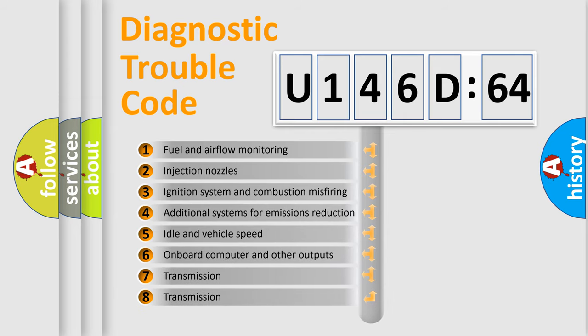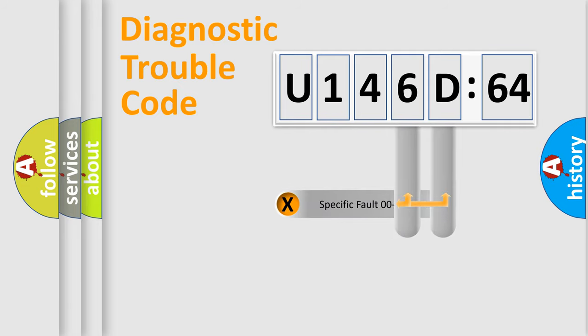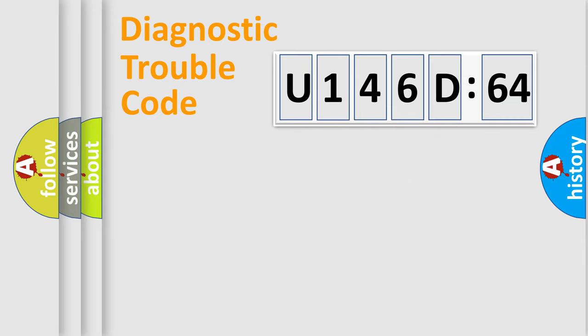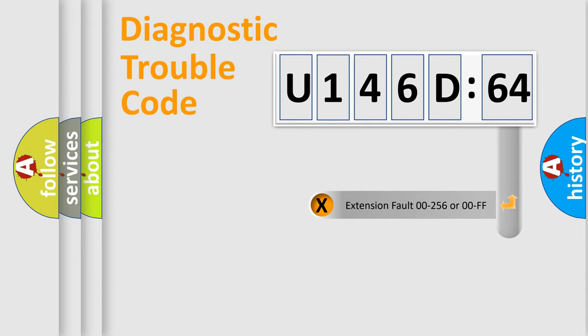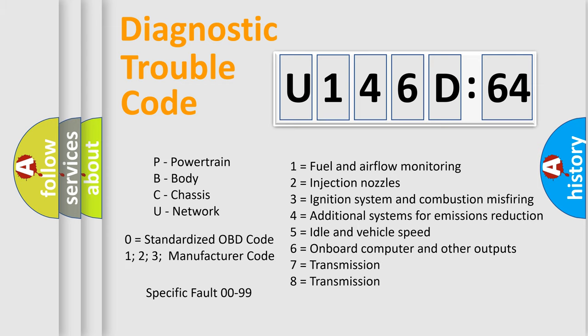The third character specifies a subset of errors. The distribution shown is valid only for the standardized DTC code. Only the last two characters define the specific fault of the group. The add-on to the error code serves to specify the status in more detail — for example, a short to ground. Such a division is valid only if the second character code is expressed by the number zero.